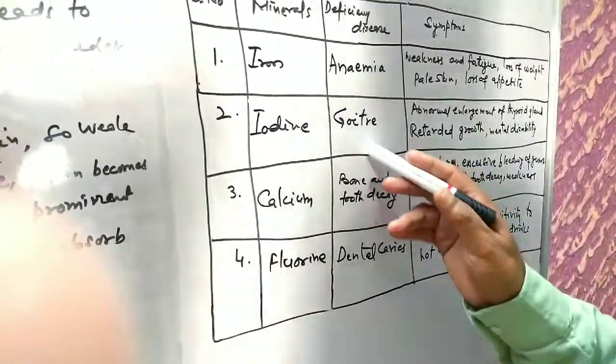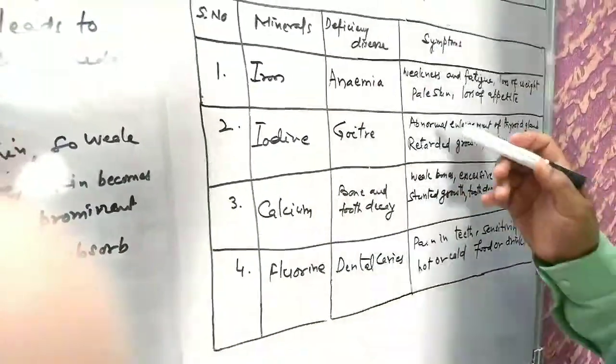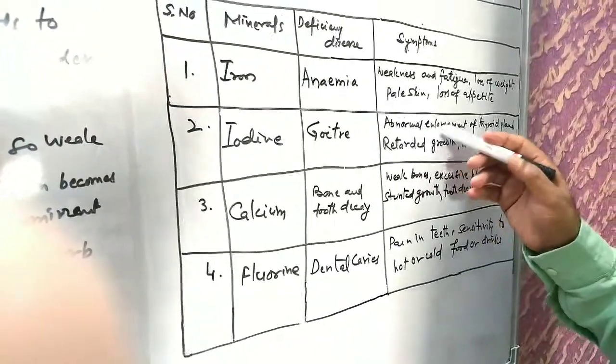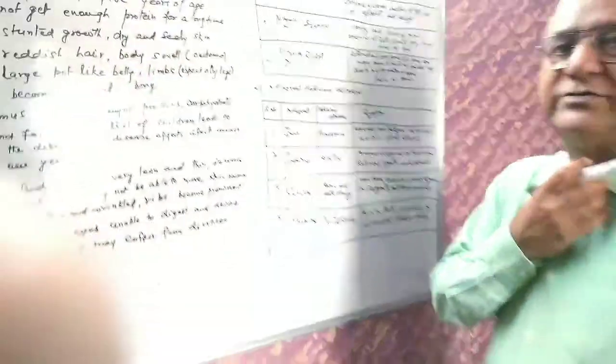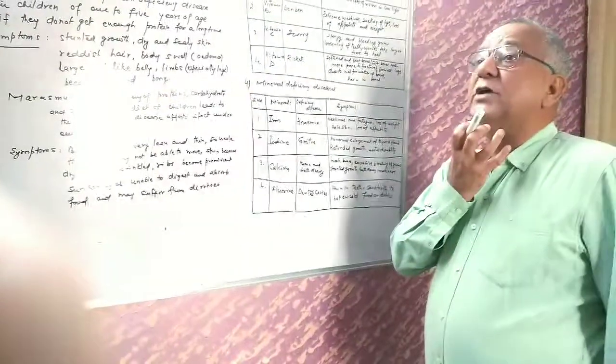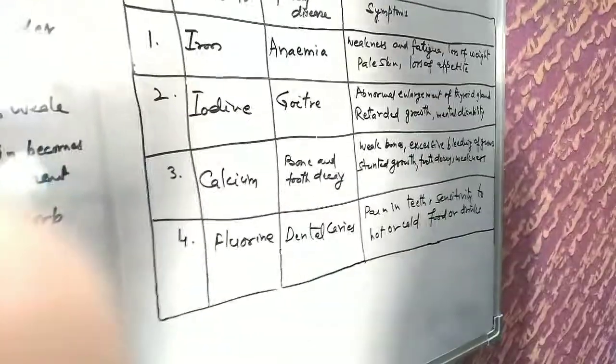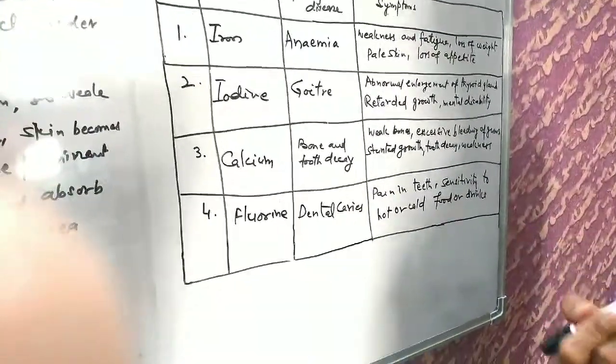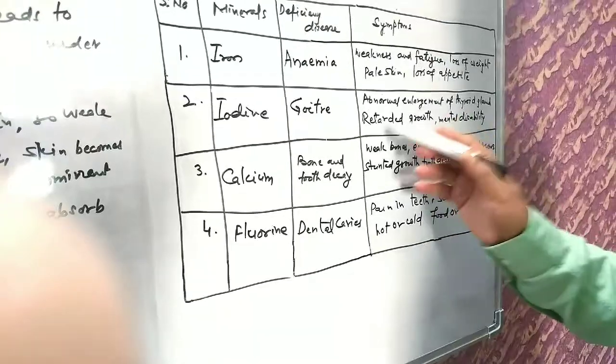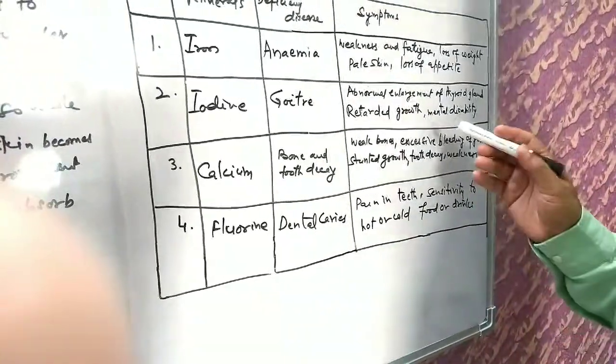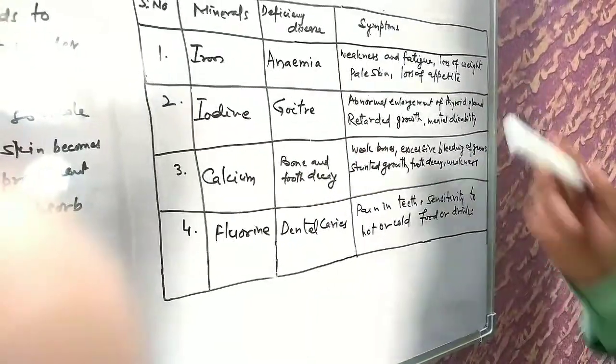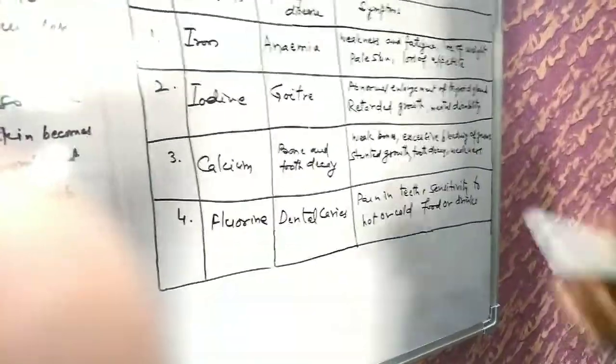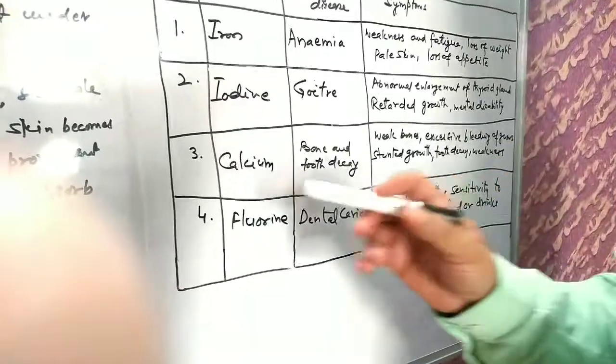Name of the disease is goiter. The symptoms are abnormally large enlargement of thyroid gland. The thyroid gland in the neck becomes very large. Retarded growth results - the normal height gain and body weight gain stops. Mental disability, especially in children's case, can also result.